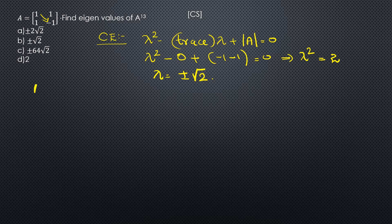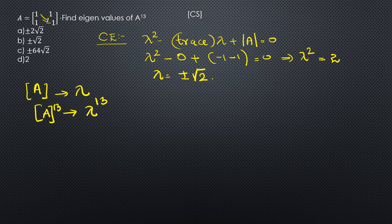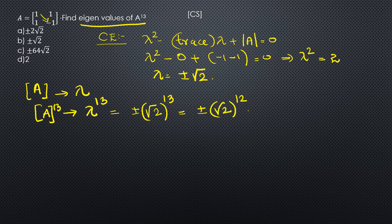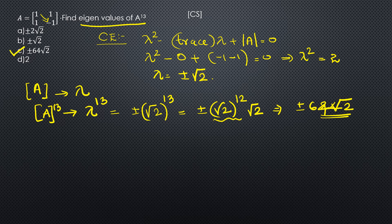By the property of eigenvalues, if matrix A has eigenvalue lambda, then A raised to 13 has eigenvalue lambda raised to 13. So the eigenvalues of A raised to 13 are (plus or minus root 2) raised to 13, which equals (root 2) raised to 12 times root 2, giving plus or minus 64 root 2.